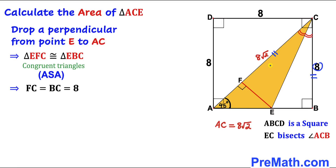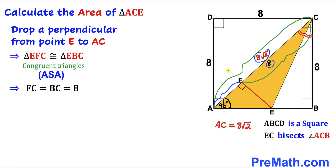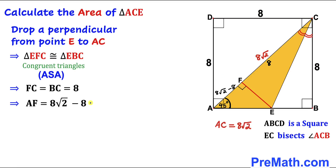Since BC is 8, this means FC is also 8. The whole length AC is 8√2 and FC is 8, so line segment AF is the difference: 8√2 − 8. Factoring out 8, this gives AF = 8(√2 − 1).